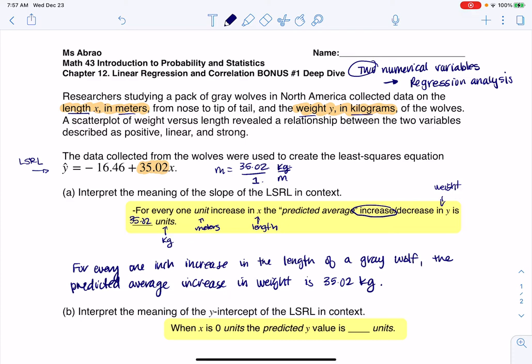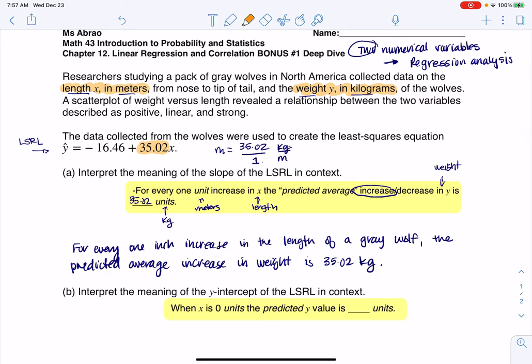I'm also asking you to interpret the y-intercept. The y-intercept is the other number that's in our LSRL. We can think of that, if I just put a little marker, as 0, negative 16.46. This is the length, and this is the weight. You can see that both of these numbers are nonsense. You're not going to have a gray wolf that's 0 meters long, and there's no way to have a wolf weigh negative 16 kilograms.